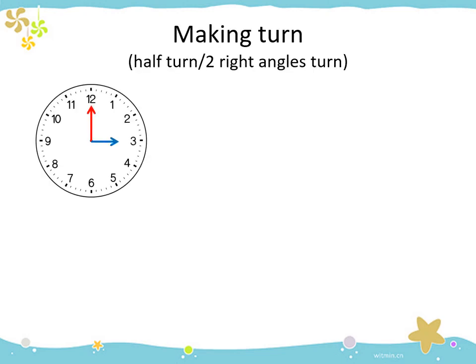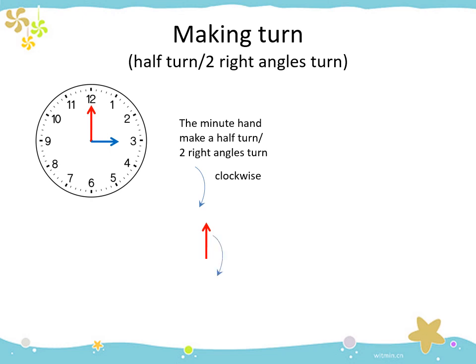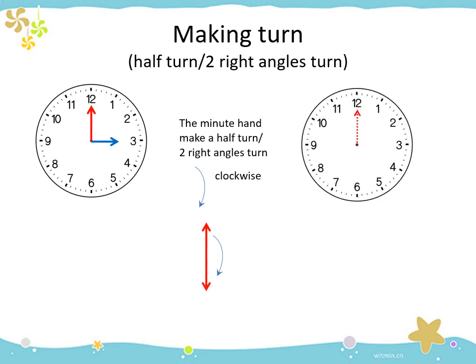Now we will learn about how to make a half turn or 2 right angles turn. The clock shows 3 o'clock. How about if the minute hand makes a half turn or 2 right angles in the clockwise direction? This is the position of the minute hand at first, and then it goes through making a half turn — it will take this new position. It points to 6 now, from 12 to 6. Because it's already past about 30 minutes, the hour hand points between 3 and 4.